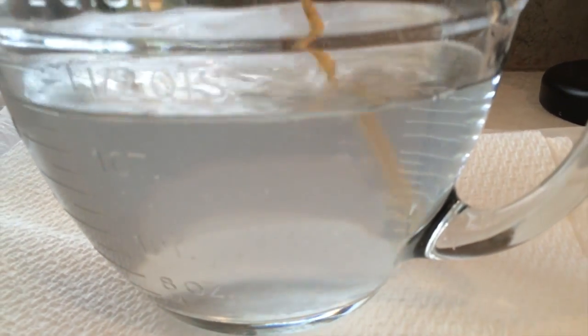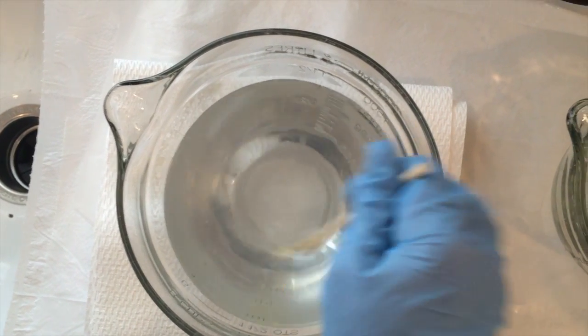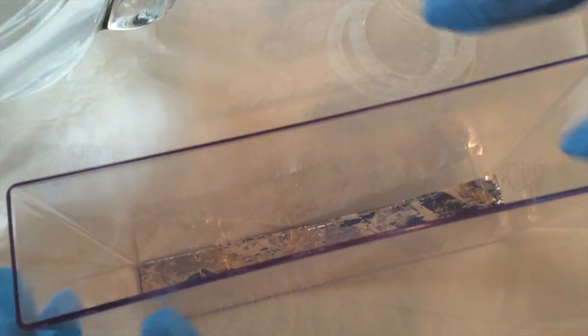Since the sodium silicate is heavier than water, it will sink to the bottom, so please make sure to stir it a lot. Put a small strip of aluminum foil and place it inside the aquarium.